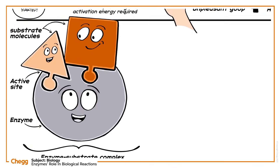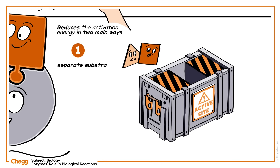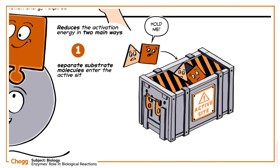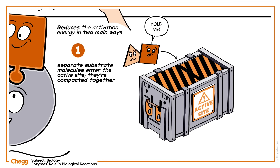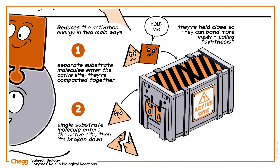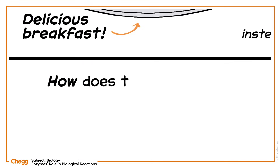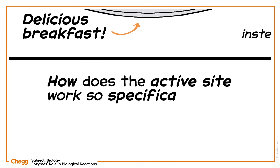Imagine the enzyme is a compactor — it reduces the activation energy in two main ways. First, if separate substrate molecules enter the active site, they're compacted together and held close so they can bond more easily, which is called synthesis. Or second, if a single substrate molecule enters the active site, then it's broken down by the strain placed on the bonds. So the question is, how does the active site work so specifically for the right combination of substrate molecules?